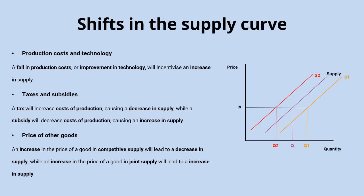Just as we saw with demand, a change in any of these factors affecting supply leads to a shift of the whole supply curve. If a factor causes supply to increase, the supply curve shifts to the right; if it causes supply to decrease, the curve shifts to the left. For example, a fall in production costs in a particular industry shifts the supply curve to the right, while an increase in a tax on a product shifts the supply curve to the left.